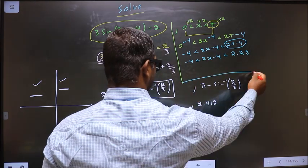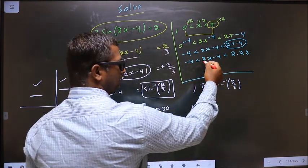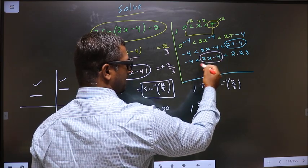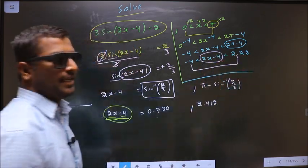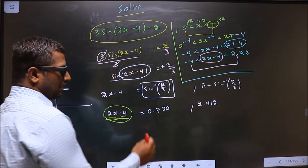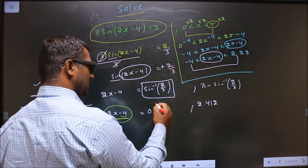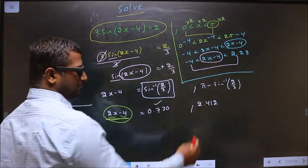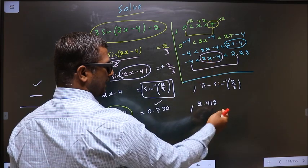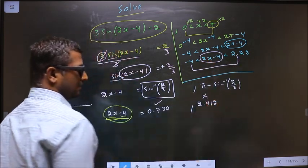Now values for 2x - 4 should lie in this interval. Now here, does 0.730 lie in this interval? Yes, accepted. Does this lie in this interval? No, this is beyond this. So this is rejected.